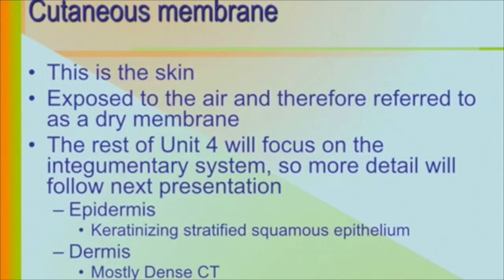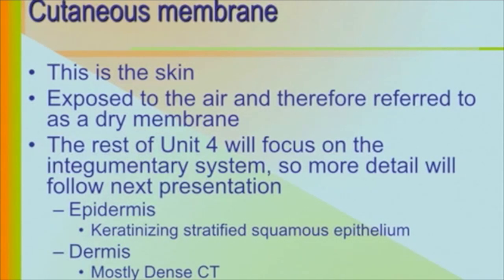Because the epidermis is made of keratinized stratified squamous epithelium, what does that tell us about its blood supply? It is avascular — meaning it has no blood supply. The epidermis relies on blood supply from the dermis. The dermis, being dense connective tissue, does have a blood supply, and it passes nutrients to the epidermis while the epidermis passes waste back to the dermis.